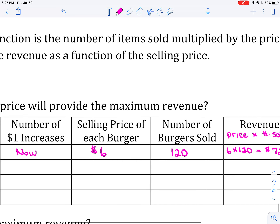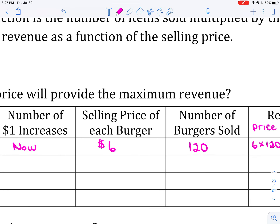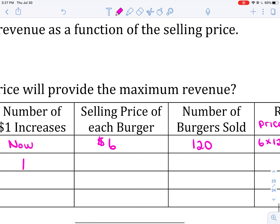What if I decided to increase the price by $1 just once? If I increase the price by $1 one time, I'm going to write it as my original price of $6 plus $1 one time, which gives a new price of $7.